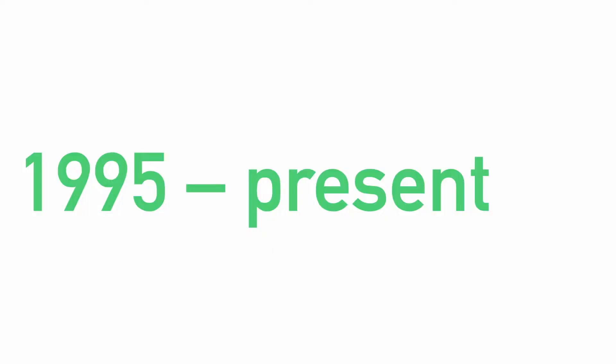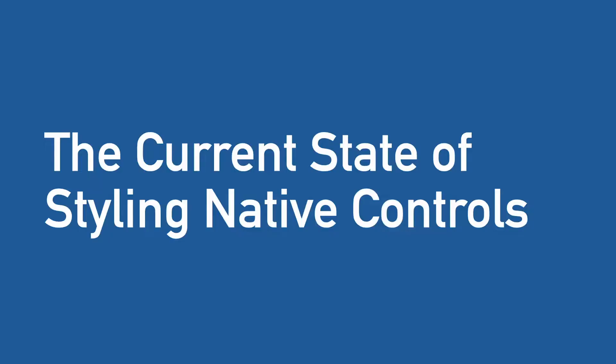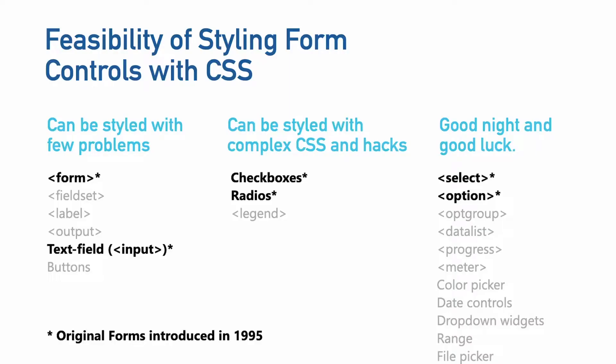Between then and now, that's been 26 years of the web evolving, and it's led us to the state we're in now. We haven't really done anything to make native form controls easier to work with, even though there have been some improvements and we've added new ones. If we look at the state of styling controls today, I've bucketed them into three categories, and most of the controls we really want more control over are in the third bucket — which I call the 'good night and good luck' bucket — because of how hard it is to style them, if you can even style them at all.